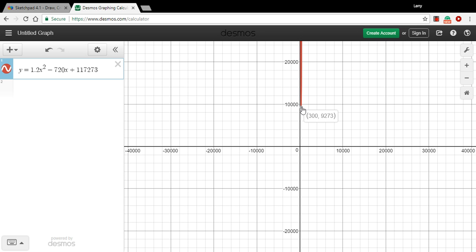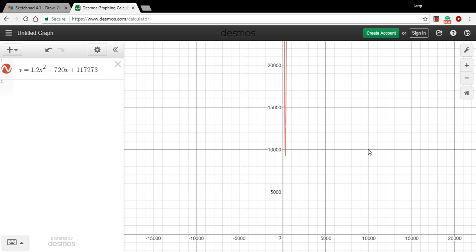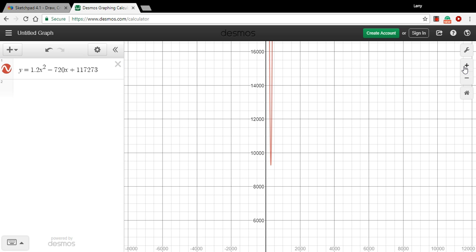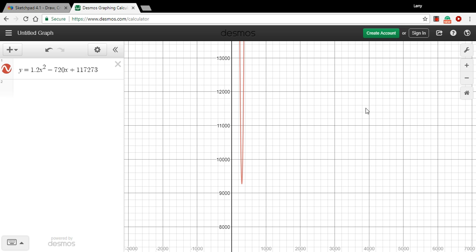You're zooming out here. Aha, there it is. So there's our... It doesn't look like a parabola because it's so skinny compared to how far out we are. Let me zoom in a little bit more on this and you can see it a little better. So there's our skinny parabola. Let's take a look at this vertex.